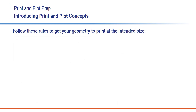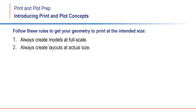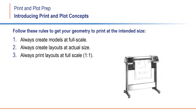If you always follow these basic rules — that you always create models at full scale, always create layouts at actual size, and always print or plot layouts at full scale or 1 to 1 — you should always be able to get your geometry to appear at the proper size on the sheet of paper when it comes out of your printer or plotter.